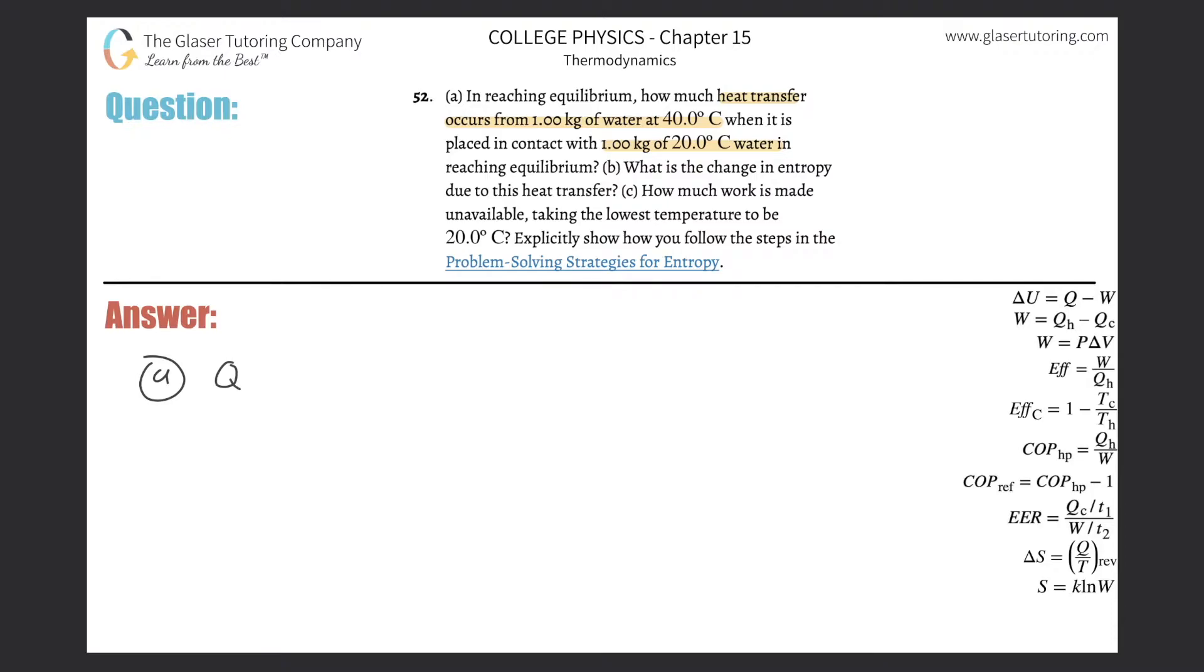I think it's chapter 13. The heat transfer to or from an object will be equal to the mass of the object multiplied by the specific heat of the object multiplied by the change in temperature of that object. Now, if I want to, so there's two waters basically coming together. There's this volume of water at 40 degrees and this volume at 20 degrees.